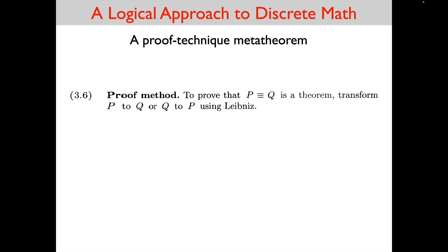This is Formal Methods Lecture 9 Recap. The first topic is the Proof Technique Metatheorem, which is 3.6 in our textbook. Do you remember what a metatheorem is? It is a theorem about theorems. So this Proof Technique Metatheorem says: to prove that P equals Q is a theorem, transform P to Q or Q to P using Leibniz. You see, this is a theorem about how to prove a theorem.